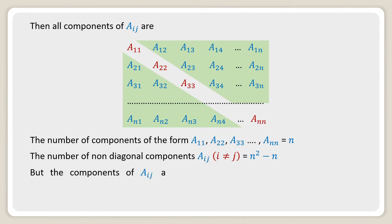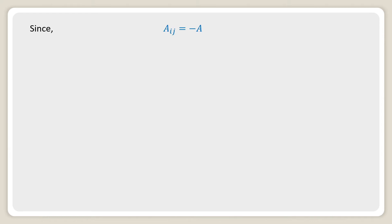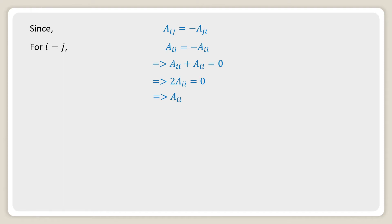Since the components of a_ij are antisymmetric, the number of independent non-diagonal components where i is not equal to j is reduced to half of (n squared minus n). Furthermore, since a_ij equals minus a_ji, for i equal to j we get a_ii equals minus a_ii, which implies 2·a_ii equals 0, which implies a_ii equals 0. Therefore, the diagonal components a11, a22, a33, ... ann are all equal to 0.